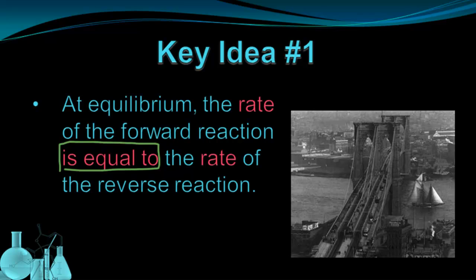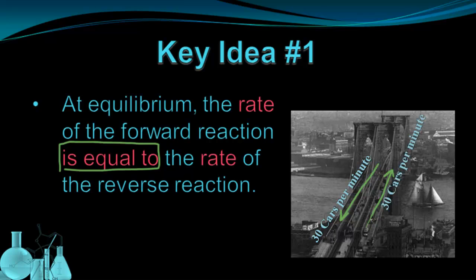We can use cars driving over a bridge as an analogy for an equilibrium reaction. Cars can cross the bridge in either direction. If 30 cars cross in one direction per minute and 30 cars also cross in the other direction per minute, the rate of cars going across the bridge is the same for both directions. Because the rates are the same, we would say this is in equilibrium.